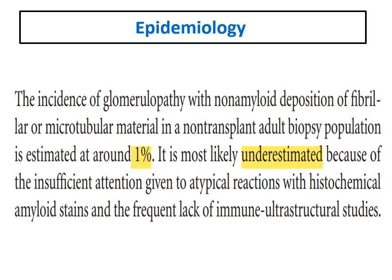Regarding epidemiology, the incidence for non-amyloid deposition, which includes fibrillary and immunotactoid, accounts for just 1%, but it is underestimated. Why is it underestimated? Because the diagnosis of immunotactoid depends mainly on electron microscopy, and electron microscopy examination for renal biopsies is not routinely done.